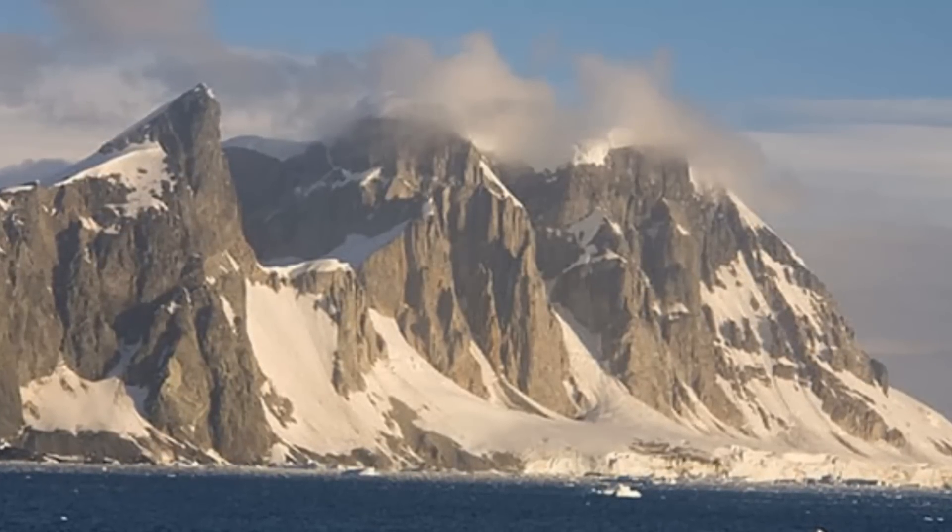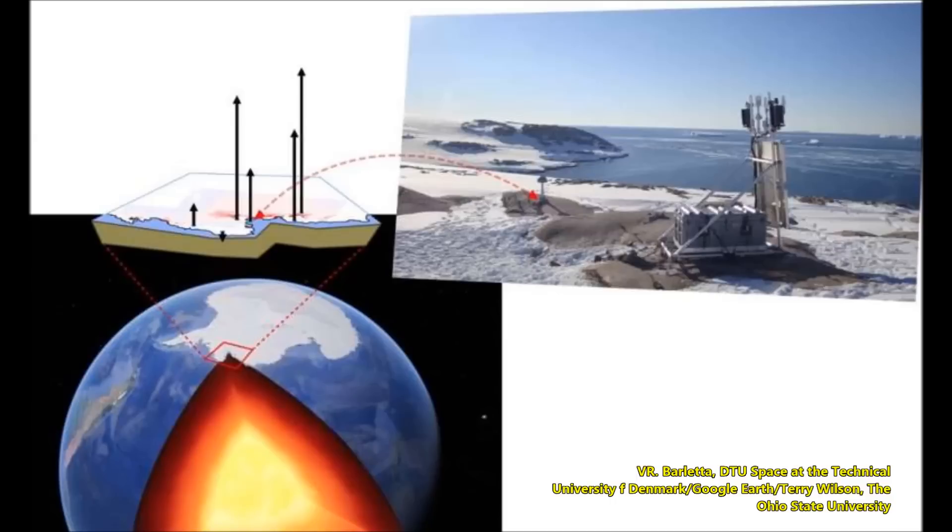Antarctica as seen using Google Earth. If we have to cut the interior of the earth, we see the mantle in red and dark red and the core in yellow are visible. The Amundsen Sea embayment is indicated by the red rectangle on the right, and the photo reveals one of the GPS sites in the study.